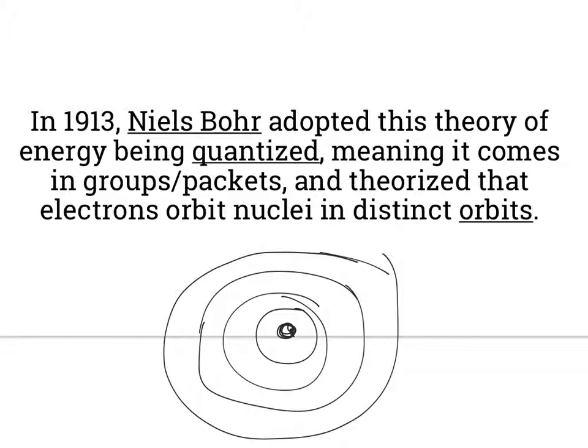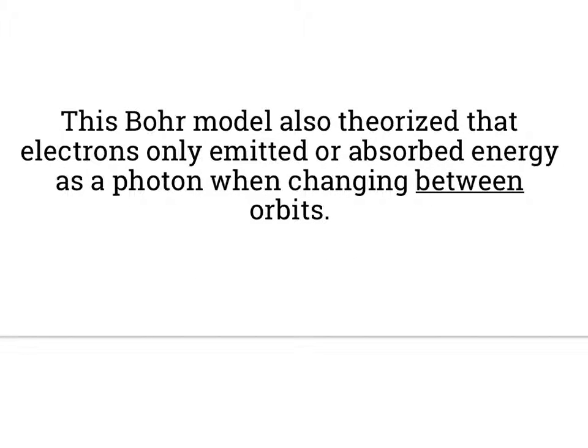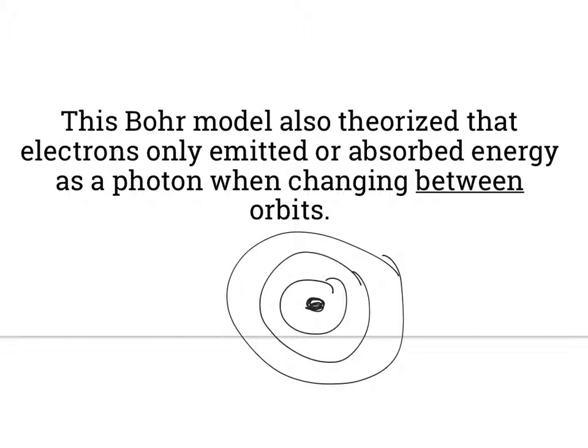And he's saying that electrons move around nucleus in actual orbits, they're in paths. And he said that electrons only emitted or absorbed energy as a photon when changing between orbits.